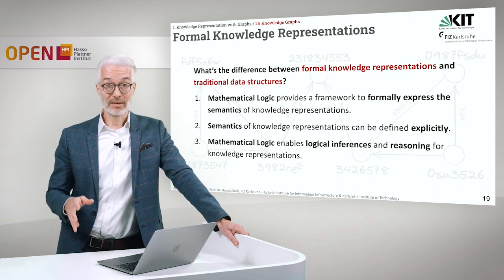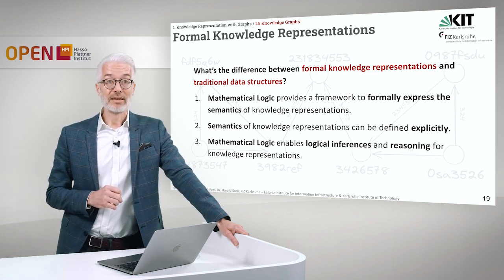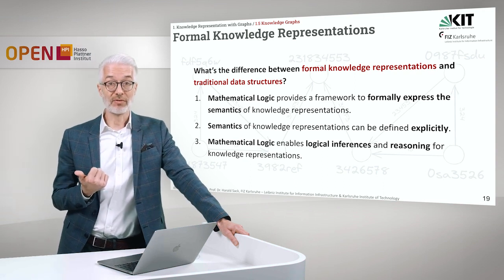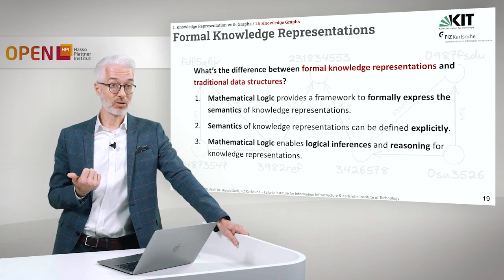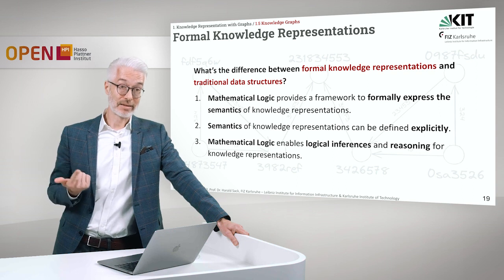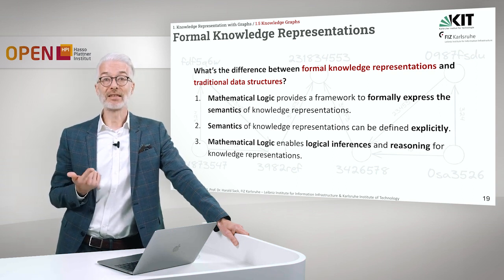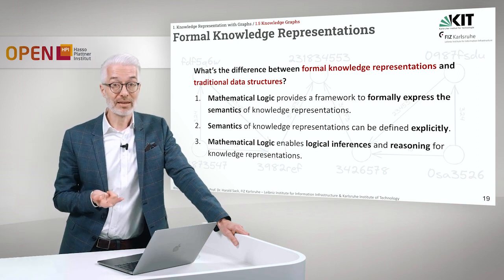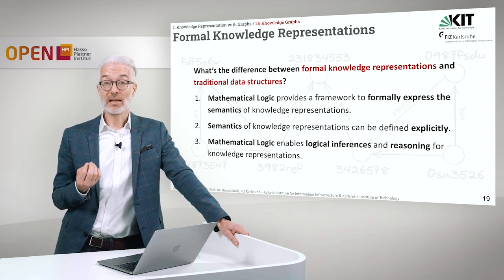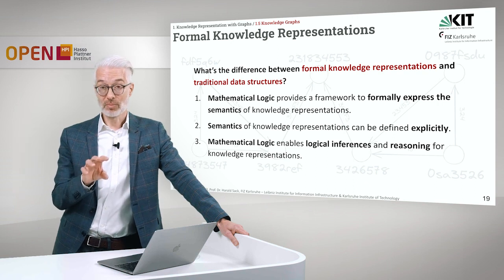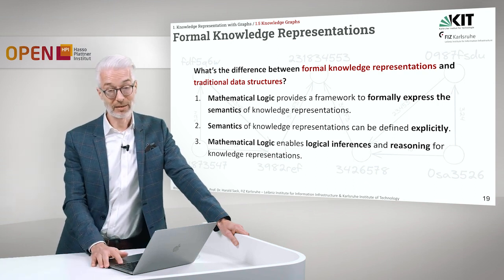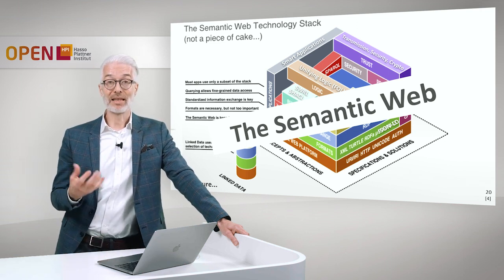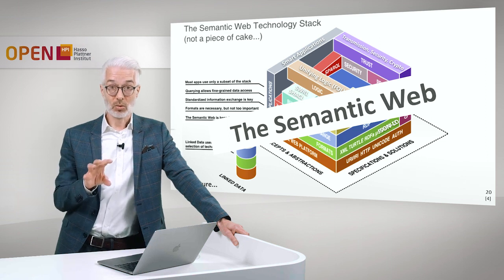Explicit semantics is the thing we will address in the next lecture. But first, let's note the difference between formal knowledge representation and traditional data structures. First, mathematical logic provides a framework to formally express the semantics of knowledge representation. Second, semantics of knowledge representation can be defined explicitly based on mathematical logic. Third, mathematical logic enables logical inferences and reasoning for knowledge representations — which is the main advantage over traditional data structures, for which reasoning must be implemented always on an individual basis. In the next lecture, we will talk about the semantic web, which is the realization of exactly that kind of concept of explicit knowledge representations within the realm of the World Wide Web.